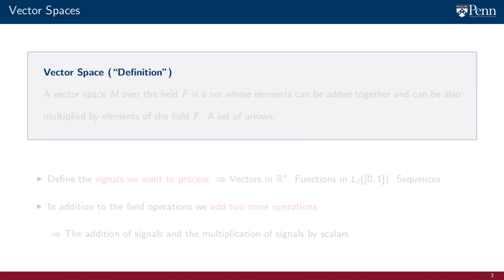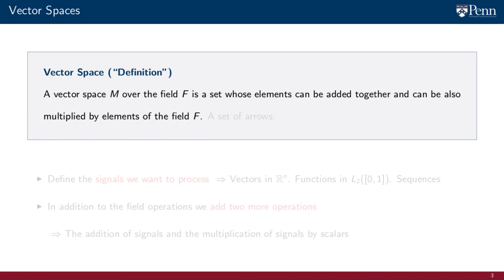The second foundational concept of linear algebra is that of a vector space. A vector space M over a field F is a set whose elements can be added together and can also be multiplied by elements of the field. Very importantly, the elements of the vector space don't have to be multiplicable with each other — we only require a product between elements of the vector space and the field.